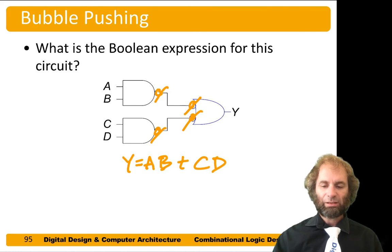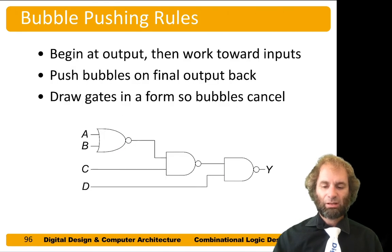If we can push bubbles around in a circle until they cancel, it becomes easy to read off the Boolean expression. Let's say we had something nastier with NANDs and NORs. This kind of circuit shows up pretty common when you're designing CMOS circuits because CMOS gates are inherently inverting. Our technique is we're going to start at the end and work our way back towards the inputs. We want to push bubbles so that we have no bubble on the output and that bubbles line up and cancel.